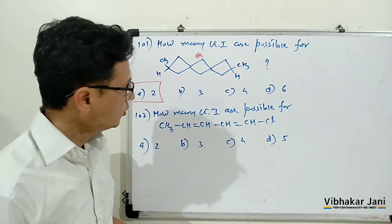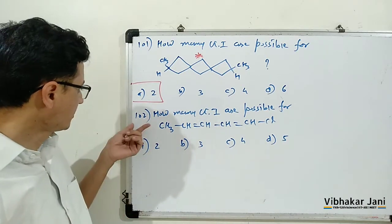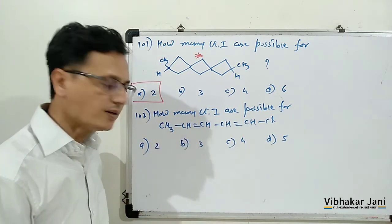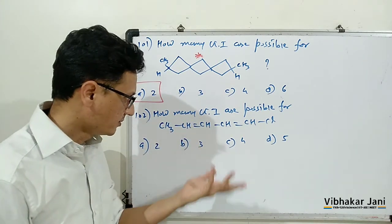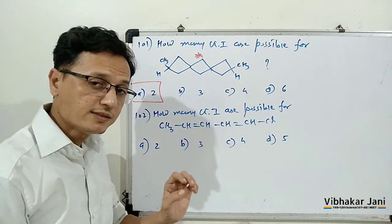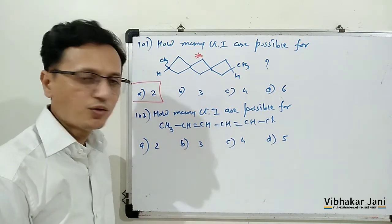Now let us solve the next question, question number 102. Again, how many GI are possible for this compound? So it is simple. Here we have two double bonds, that is we have even number of double bonds.